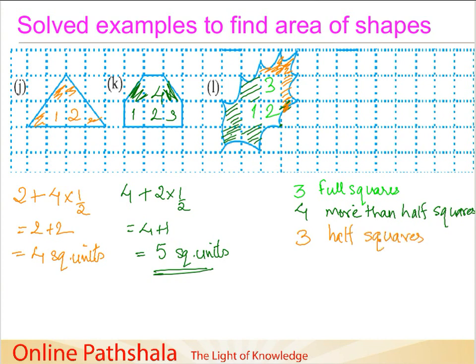So now if I want to add all of these, I have three plus four plus three times one by two. Which is nothing but one point five. So we have three plus four plus one point five. Which gives us three plus four is seven plus one point five equals eight point five square units.